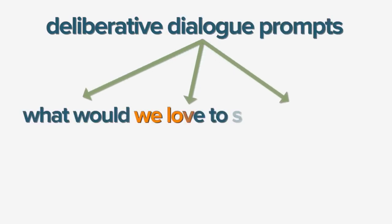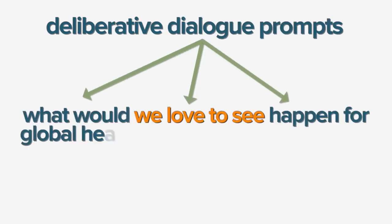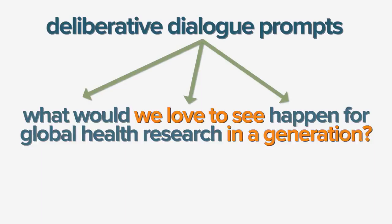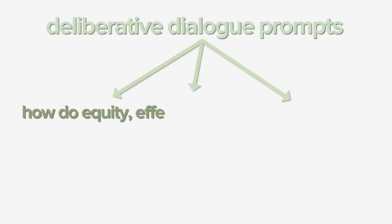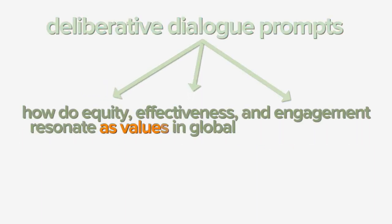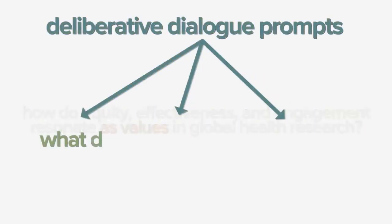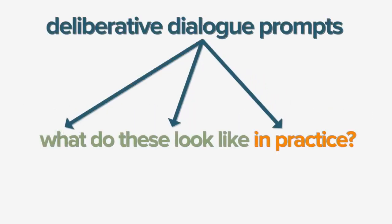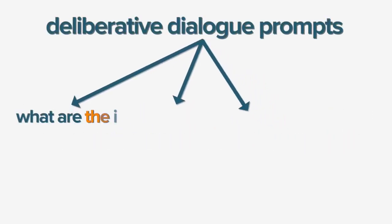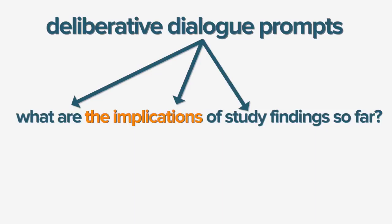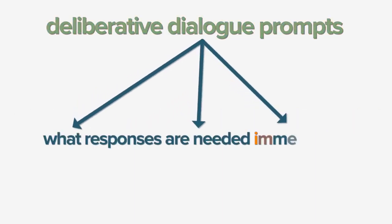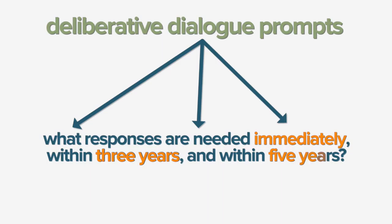In these dialogues, we prompted participants with questions: What would we love to see happen for global health research in a generation? How do equity, effectiveness and engagement resonate as values in global health research? What do these look like in practice? What are the implications of study findings so far, and what responses are needed immediately, within three years, and within five years?